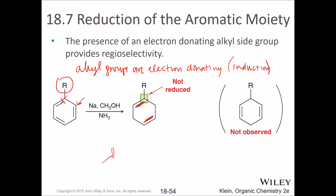So with an electron-donating group, those carbons are not going to be reduced. Can you guess what happens if you have an electron-withdrawing group instead — is it going to be reduced or not?